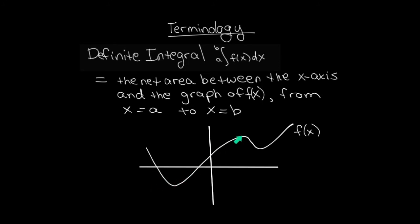Suppose we had a graph of a function like the following. The value of this integral, according to this graph, would be the total area between the function and the x-axis from x equals a to x equals b. In this rough picture, there is more area above the x-axis than there is below the x-axis, so I can immediately tell that the value of the definite integral for this picture is positive, because the area above the x-axis is counted as positive and the area below the x-axis is counted as negative.